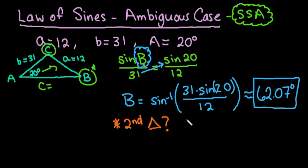So you always want to, after you've found your first angle measure, we want to see if it's possible to find a second triangle. And basically what we need to do is we need to find the supplement of the angle that we just found.